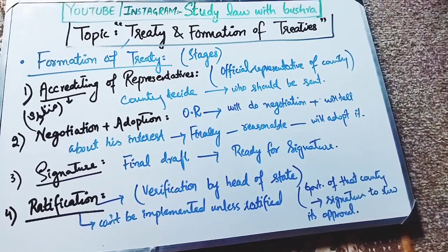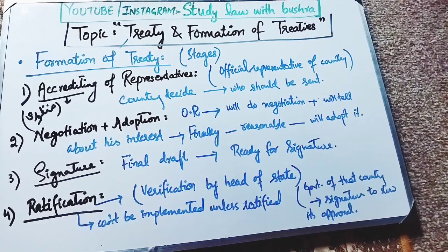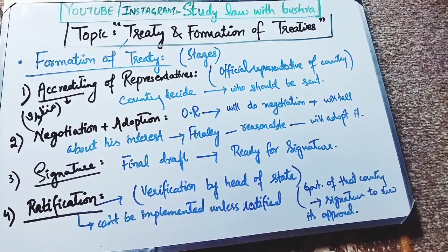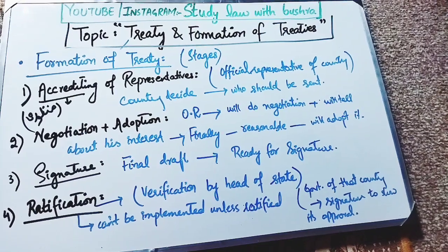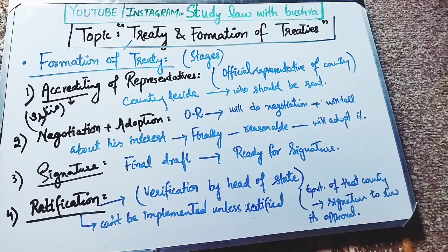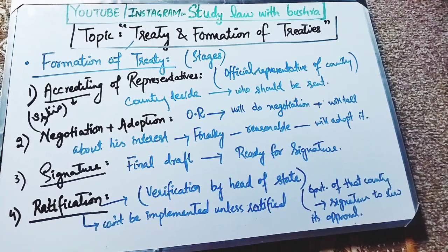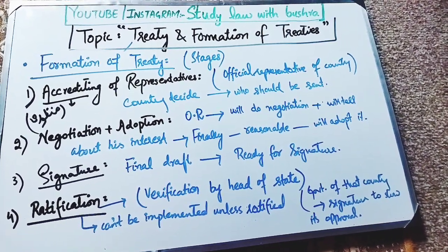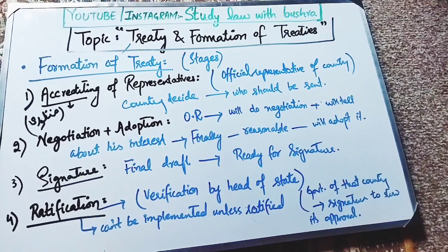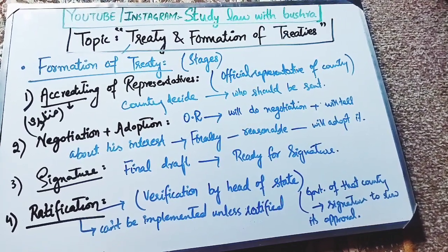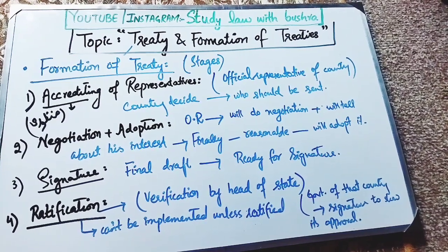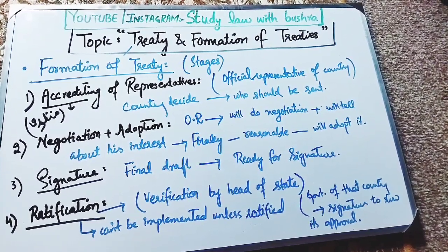The third stage is signing of the treaty — the signature. When the representative of the country has found the terms reasonable and adopted them, after the final draft of the treaty is prepared, the next step is the signature. That treaty is then ready for signature, and the official representative signs that treaty.